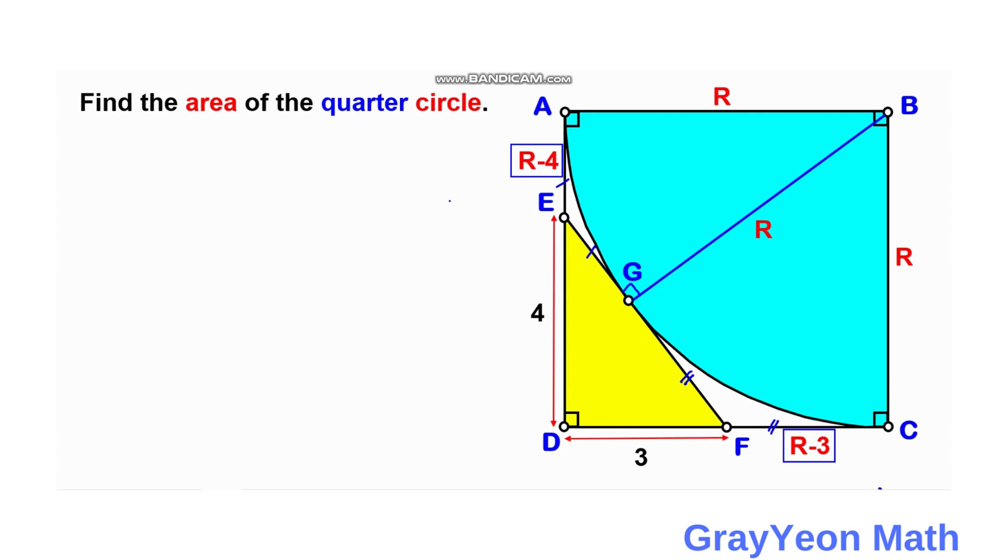Since they are both tangent at G and C and their common external point is F. So with those two, if segment AE is R minus 4, then this segment EG is actually R minus 4. And likewise for a segment, if segment FC is R minus 3, then segment FG is actually equal to R minus 3.